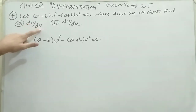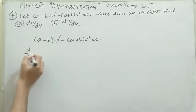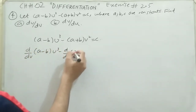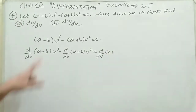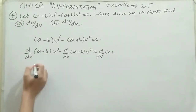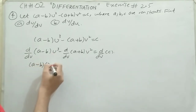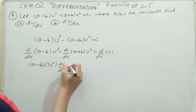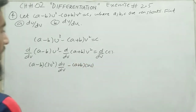We are going to find the derivative of u with respect to v. That means we differentiate both sides of the equation with respect to v. Taking d/dv: (a minus b) times d/dv of u cubed, minus d/dv of (a plus b) v squared, equals d/dv of constant c. Since (a minus b) is a constant, we take it outside. The derivative of u cubed is 3u squared, and since u is the inner function, we write du/dv. Minus (a plus b) times the derivative of v squared is 2v.